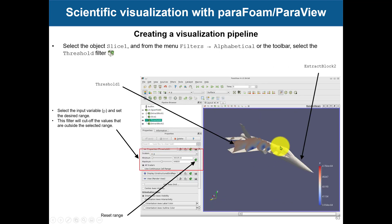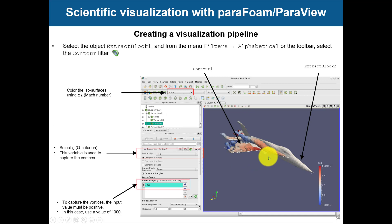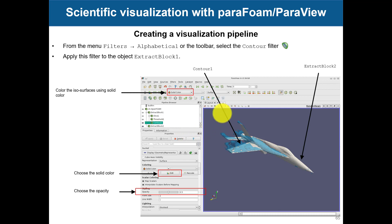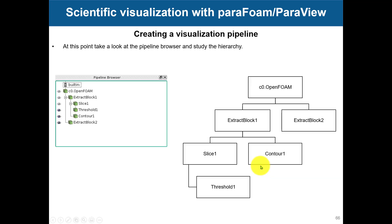Then create cut planes and put some field there. We can also put multiple cut planes. So we're going to see these actions. Then streamlines, we can also use threshold in the cut planes just to have a specific range that we want to visualize. We can also compute, visualize isosurfaces. In this case, we're using Q criterion that is used to capture vortices.